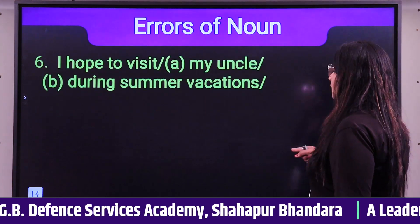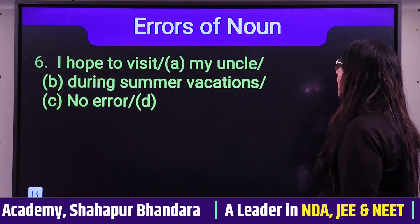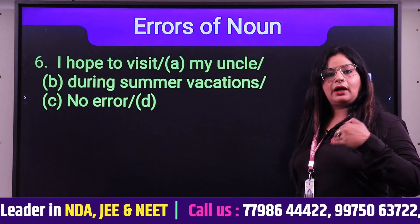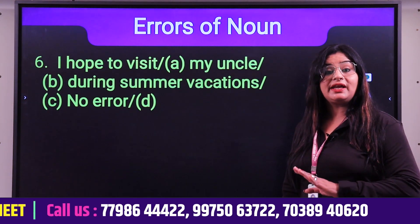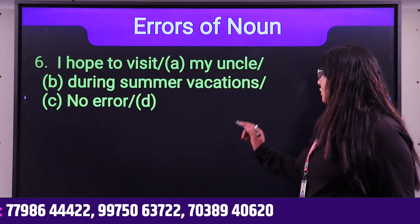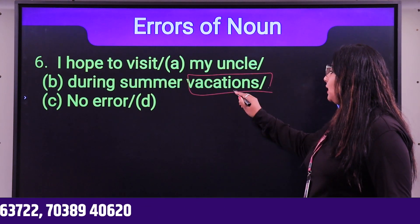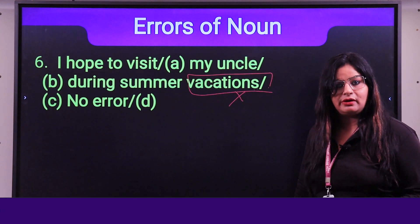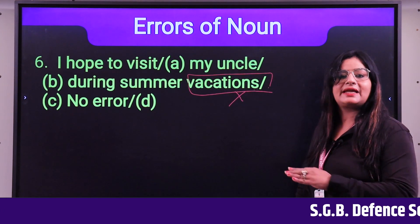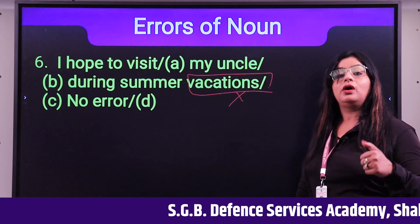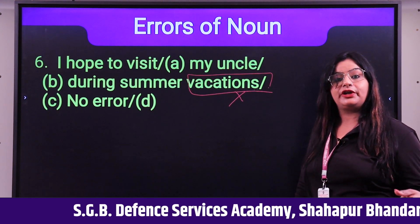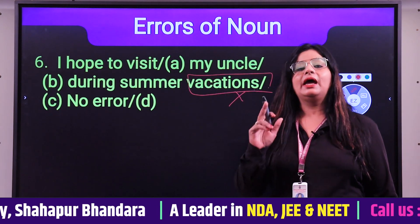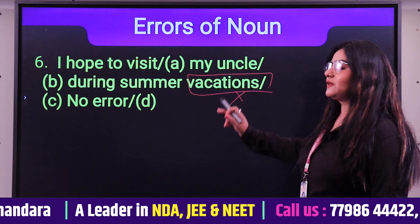Next exam question: 'I hope to visit my uncle during summer vacations.' The word 'vacation' never takes an S — it belongs to the category of uncountable/invariable nouns like tea, coffee, information, news, and mischief. So 'vacations' is wrong; it should be 'vacation.' This is the error in the sentence.